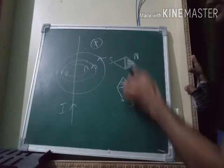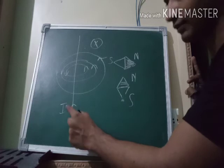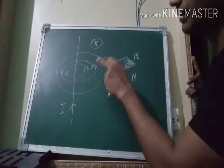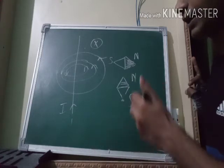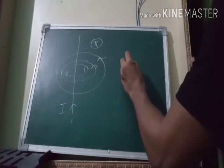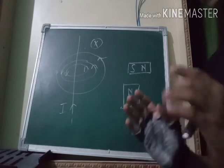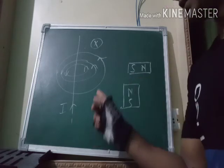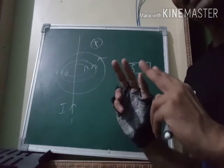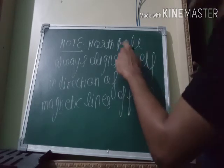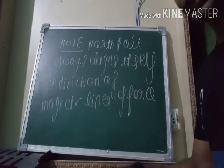So the observation is: the compass needle shows deflection once current passes through a straight current-carrying wire. The deflection is due to the magnetic lines of force produced by the wire. Whenever asked why a compass needle deflects near a current-carrying wire, you will say: because the north pole of the magnet always tries to align itself in the direction of magnetic lines of force, due to which it gets deflected. Note: the north pole of a magnet always aligns itself in the direction of magnetic lines of force.